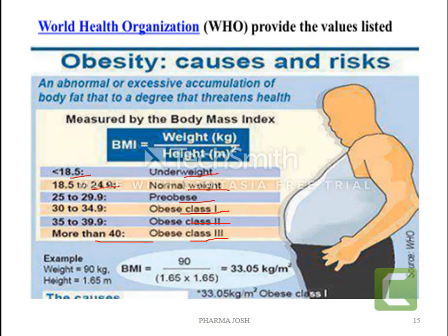Here is one example. A person weighing 90 kg with height 1.65 meters — BMI equals 90 divided by 1.65 × 1.65, giving 33.05 kg/m². This falls between 30 to 34.9, meaning Class 1 obesity category. We can calculate our own BMI as well as other patients' BMI. According to the BMI, we can easily observe and categorize which category the patient belongs to.